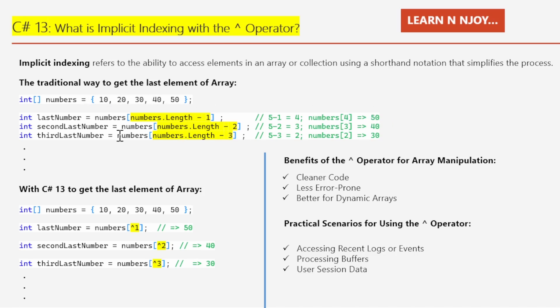Similarly, if you want to get the second last number, we just need to subtract 2 from the length of the array — numbers[numbers.Length - 2]. For the third last number, we subtract 3 — numbers[numbers.Length - 3]. So this is how we get the last, second last, and third last elements in the traditional fashion.